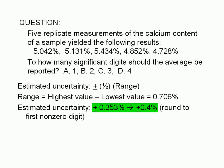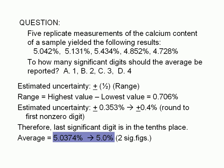Our uncertainty is in the tenths place. Therefore, when we report the average, the last significant digit should be in the tenths place. If we plug in the five results into a calculator, we get an average of 5.0374%. We should round this average to the nearest tenth. So we report it as 5.0%, with two significant digits, 5 and 0.